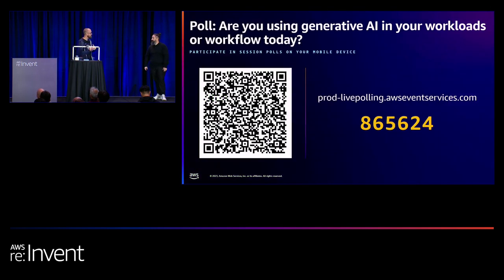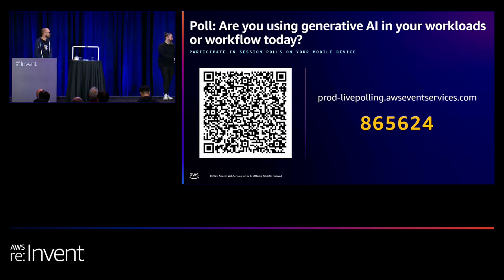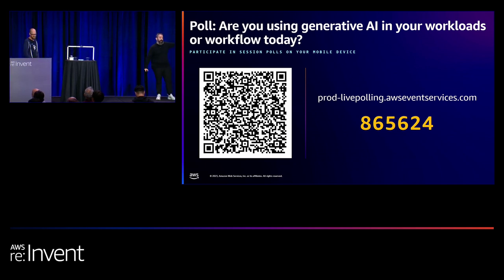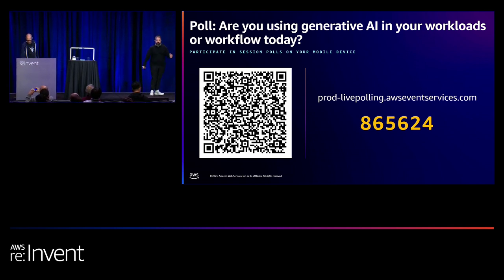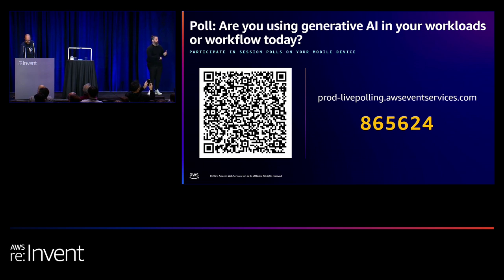Slides might be a bit more deterministic than the example. Generation's definitely not deterministic. We also have live polling — if you're interested, you can pull out your phone and use that QR code. As results come in, we'll get a signal from the back and start discussing them. They're all multiple choice, no wrong answers — we just want to gauge your opinion on a few different things.